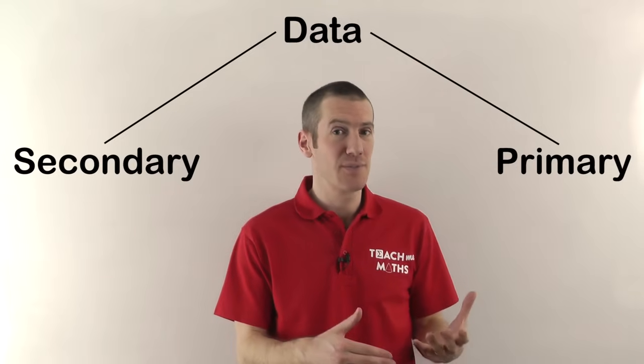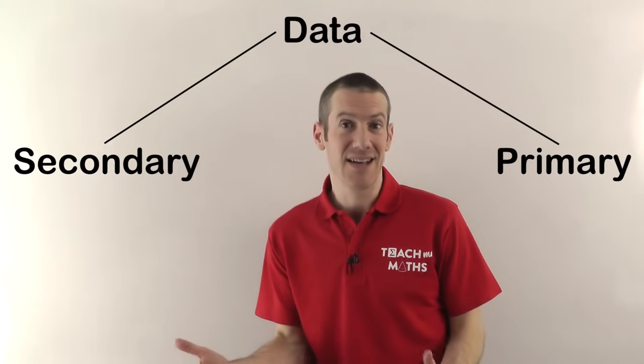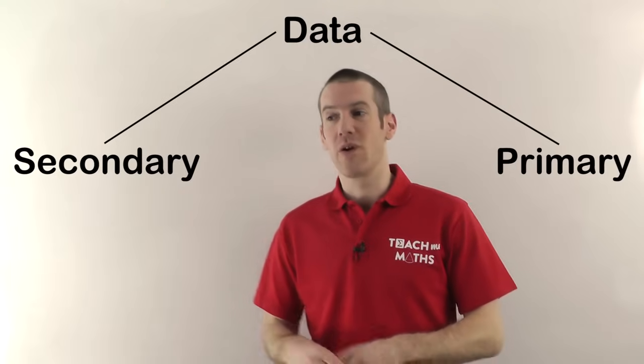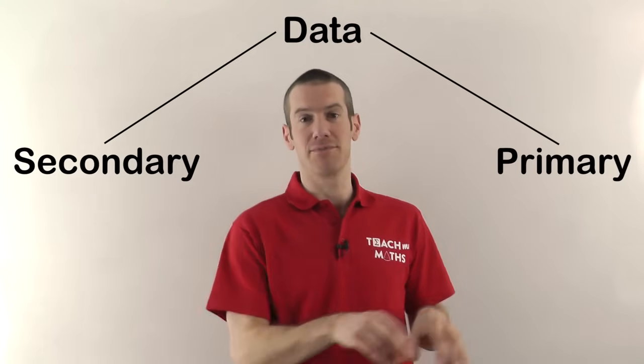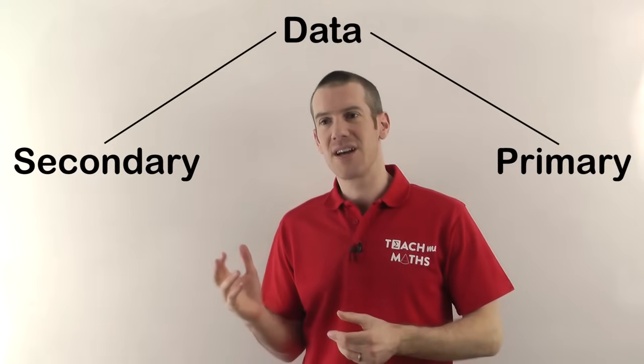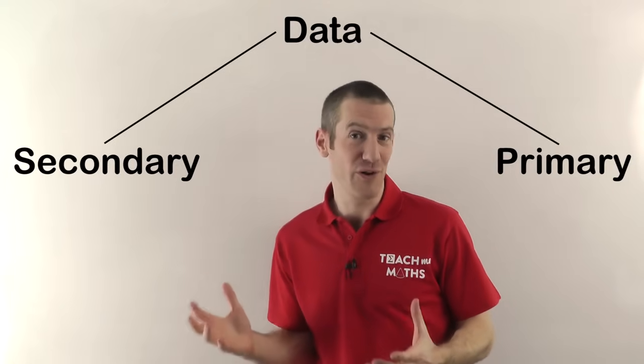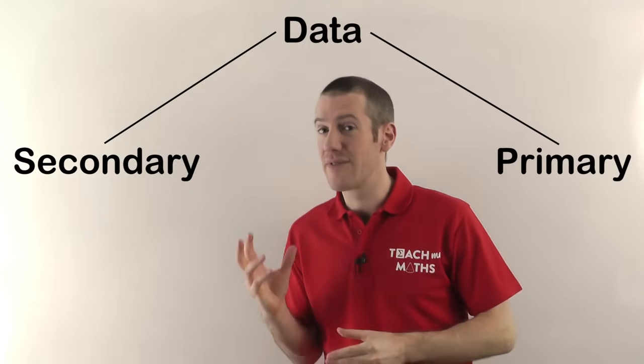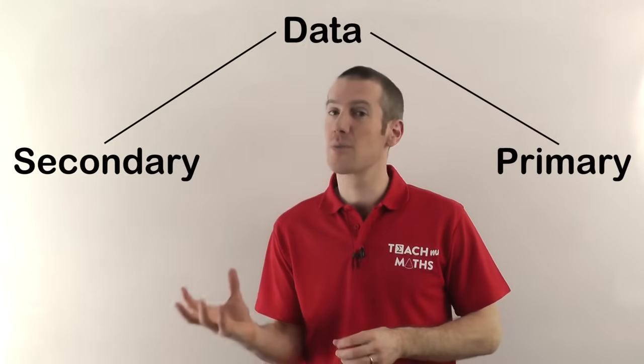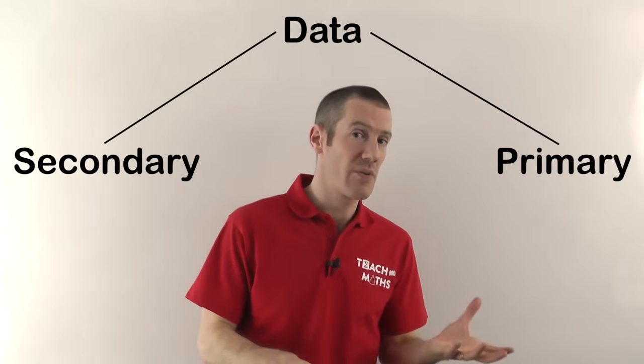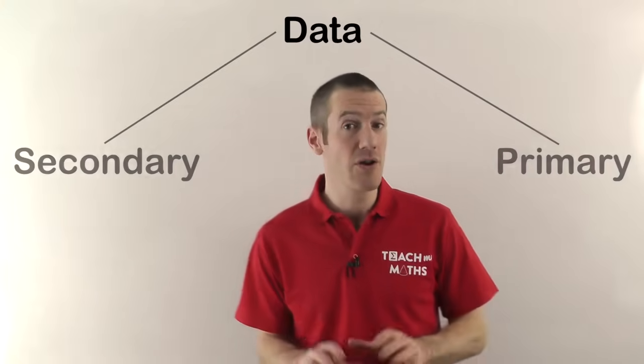Obviously though, primary data is much more time-consuming to collect and expensive if you have to travel around the world asking all these people yourself. Whereas secondary data, you can just go online, use your computer, and find out the information very quickly. So secondary data tends to get used far more often in practice because it's so quick and easy to do. But as I say, you just got to be very careful about the source - do you trust the place you're getting the data from?